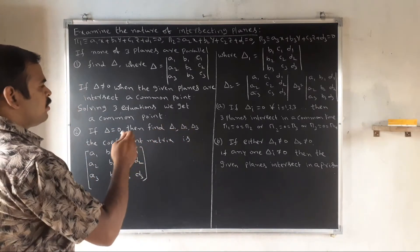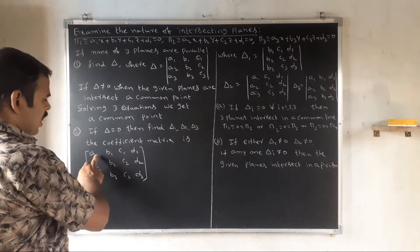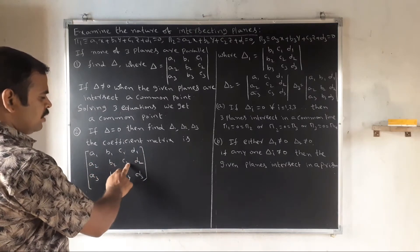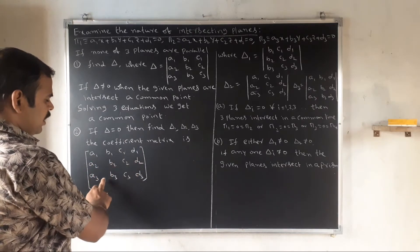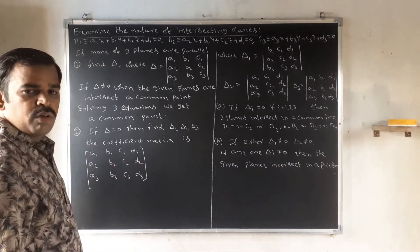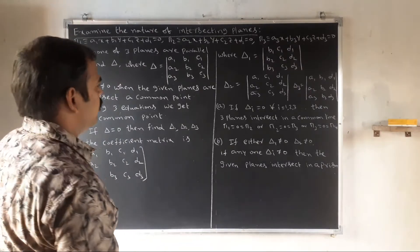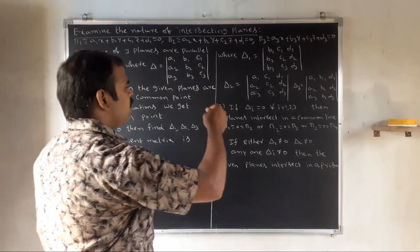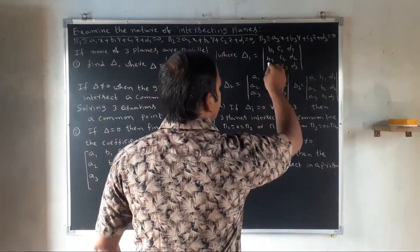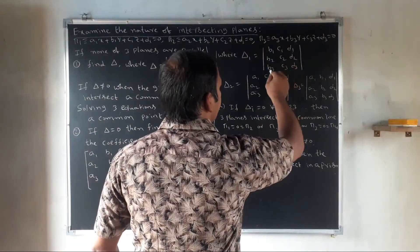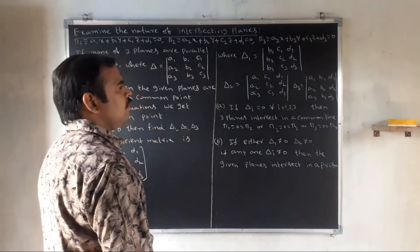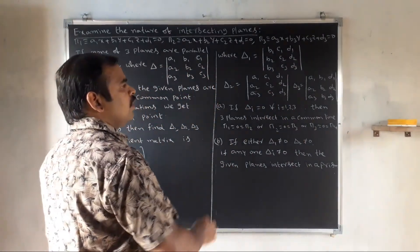The augmented coefficient matrix is formed with entries a1, b1, c1, d1 in the first row; a2, b2, c2, d2 in the second row; a3, b3, c3, d3 in the third row. Delta1 is the determinant obtained by replacing the first column with d1, d2, d3 — giving the determinant of (b1, c1, d1), (b2, c2, d2), (b3, c3, d3).